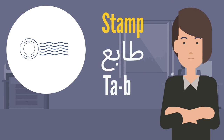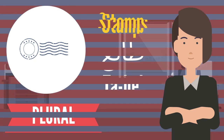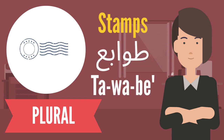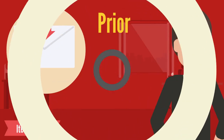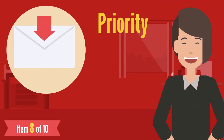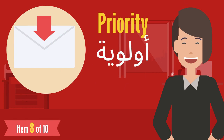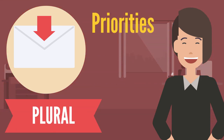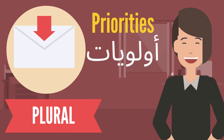Stamp — طابع. In the plural form, stamps is طوابع. Priority — أولوية — and priorities is أولويات.